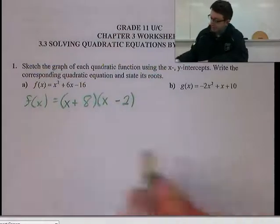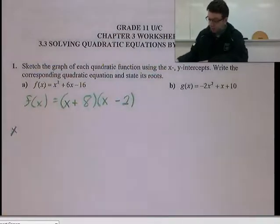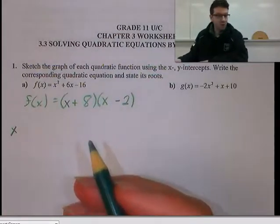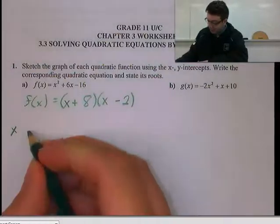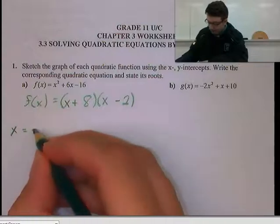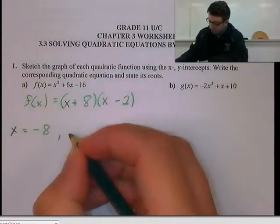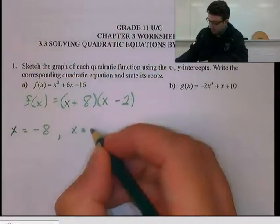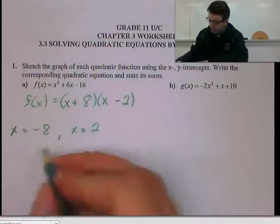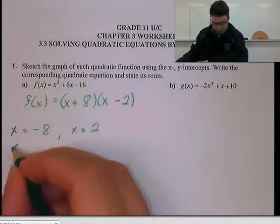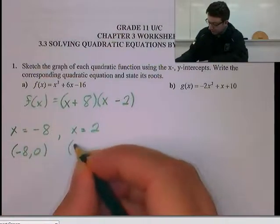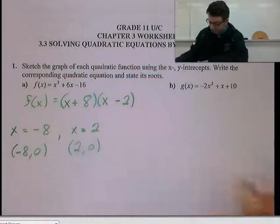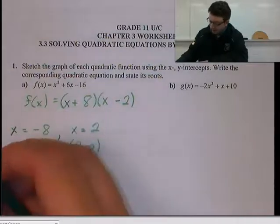Alright, so from here you can see what the roots are, or what the zeros are, or the x-intercepts are, all the same thing. We're going to have x equals negative 8, or x equals 2. So our coordinates for our x-intercepts are minus 8 and 0, and 2 and 0. So that's the x-intercepts.